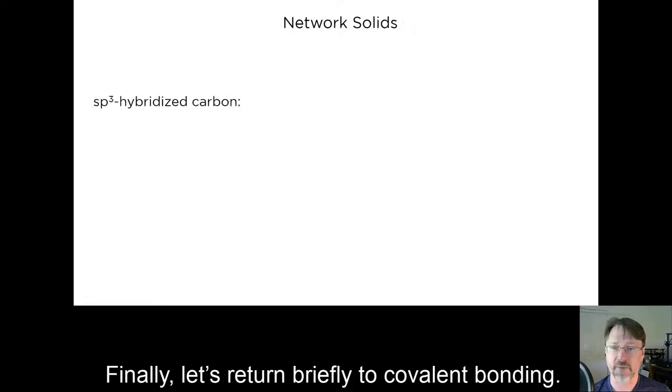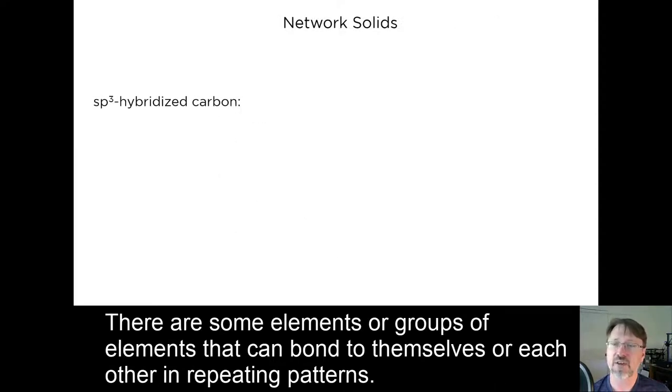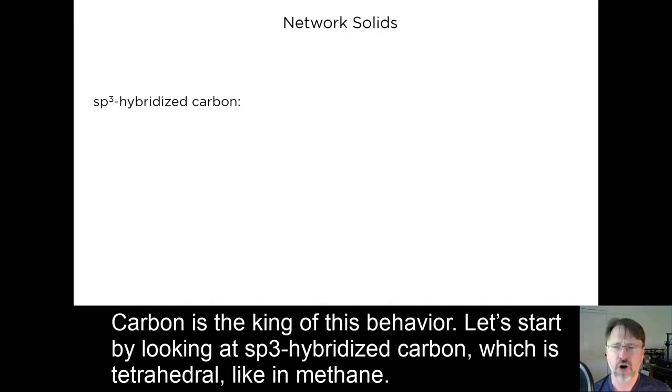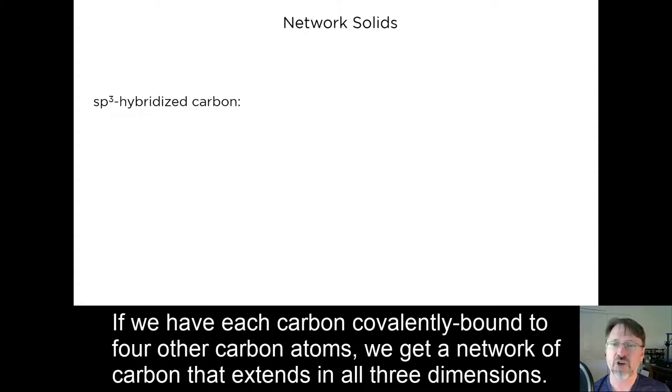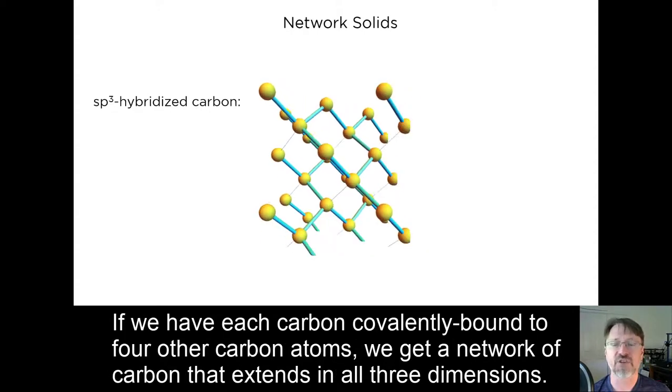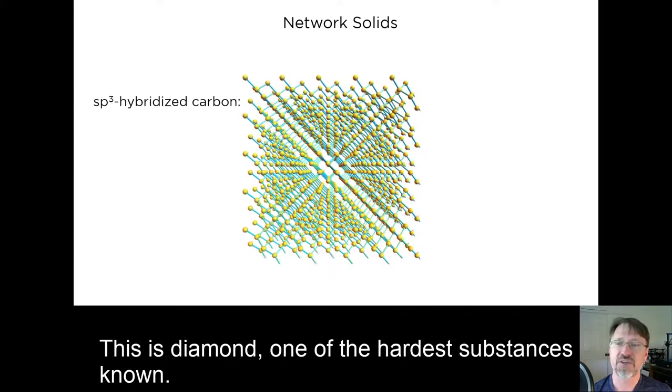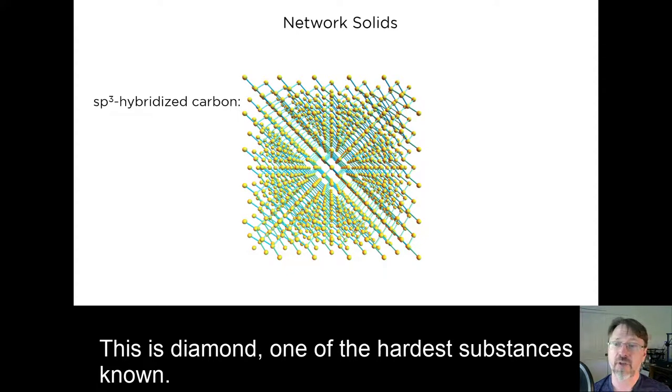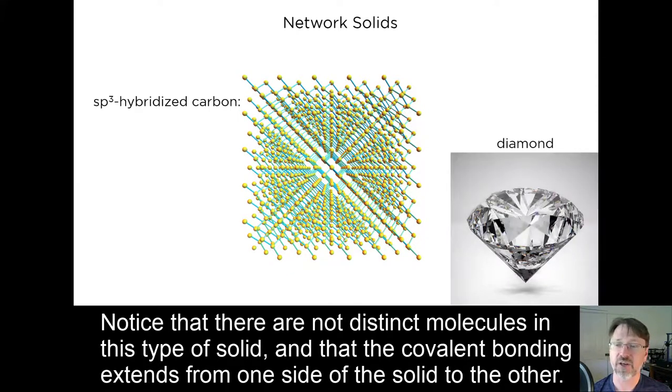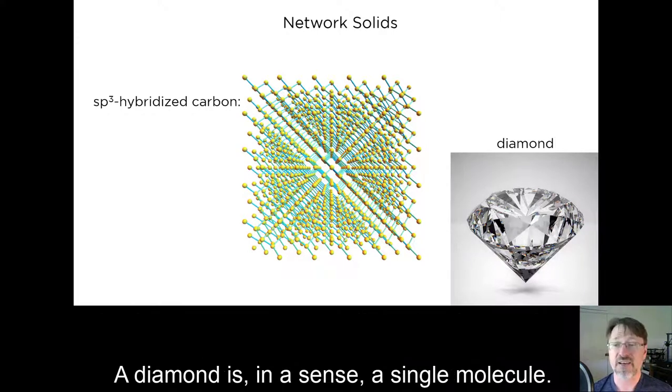Finally, let's return briefly to covalent bonding. There are some elements, or groups of elements, that can bond to themselves or each other in repeating patterns. Carbon is the king of this behavior. Let's start by looking at sp3 hybridized carbon, which is tetrahedral, like methane. If we have each carbon covalently bound to four other carbon atoms, we get a network of carbon that extends in all three dimensions. This is diamond, one of the hardest substances known. Notice that there are not distinct molecules in this type of solid, and that the covalent bonding extends from one side of the solid to the other. A diamond is, in a sense, a single molecule.